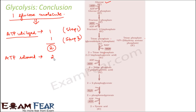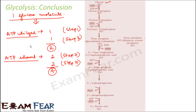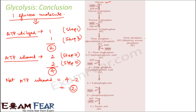Now, 2 molecules of ATP were released in step 7, and again 2 molecules of ATP were released in step 10, the last step. So total ATP released were 4. Now, 2 ATP were utilized and 4 ATP were released, so net ATP released will be 4 minus 2, that is 2. So net 2 molecules of ATP were formed during glycolysis.